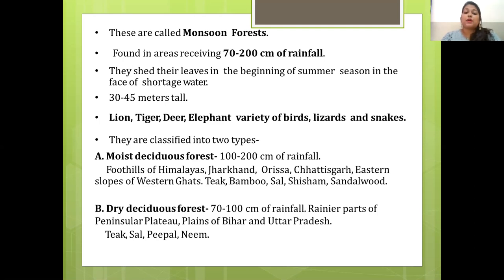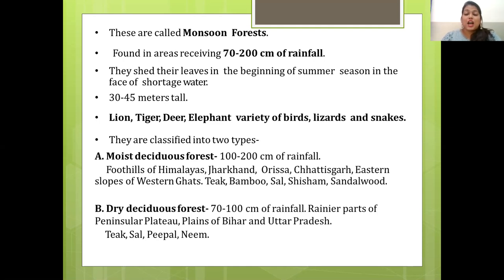Dry deciduous forests receive about 70 to 100 cm of rainfall. The rainier parts of the Peninsular Plateau and the plains of Bihar and Uttar Pradesh are places where dry deciduous forests are found. Common trees here are teak, sal, peepal and neem.